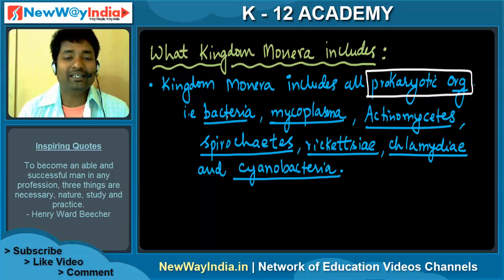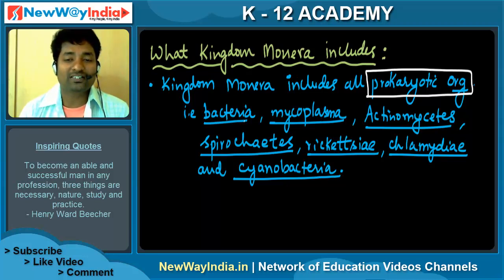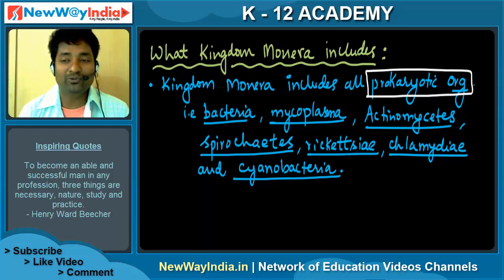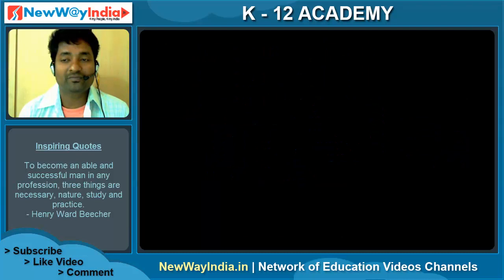Majorly bacteria and Mycoplasma — that is what you will generally get in questions. Otherwise Actinomycetes, Spirochetes, Rickettsia, Chlamydia, and Cyanobacteria are the other organisms that Kingdom Monera includes.